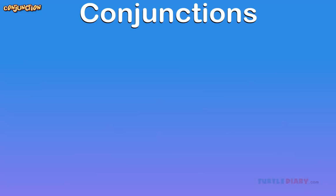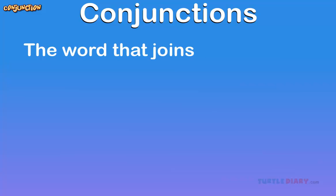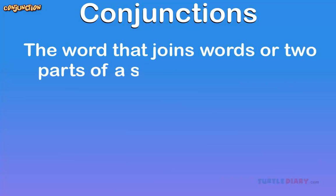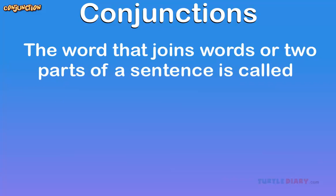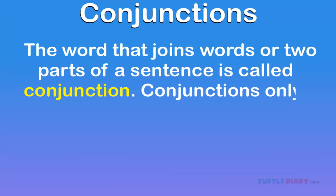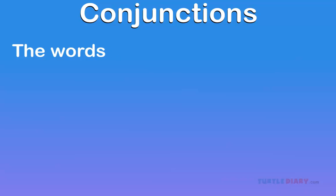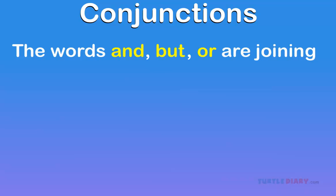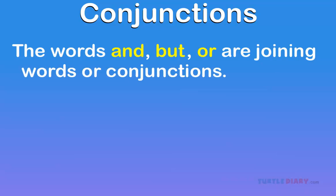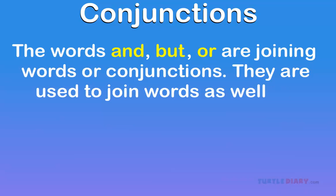Conjunctions. The word that joins words or two parts of a sentence is called a conjunction. Conjunctions only join — they do no other work. The words and, but, or are joining words or conjunctions. They are used to join words as well as sentences.